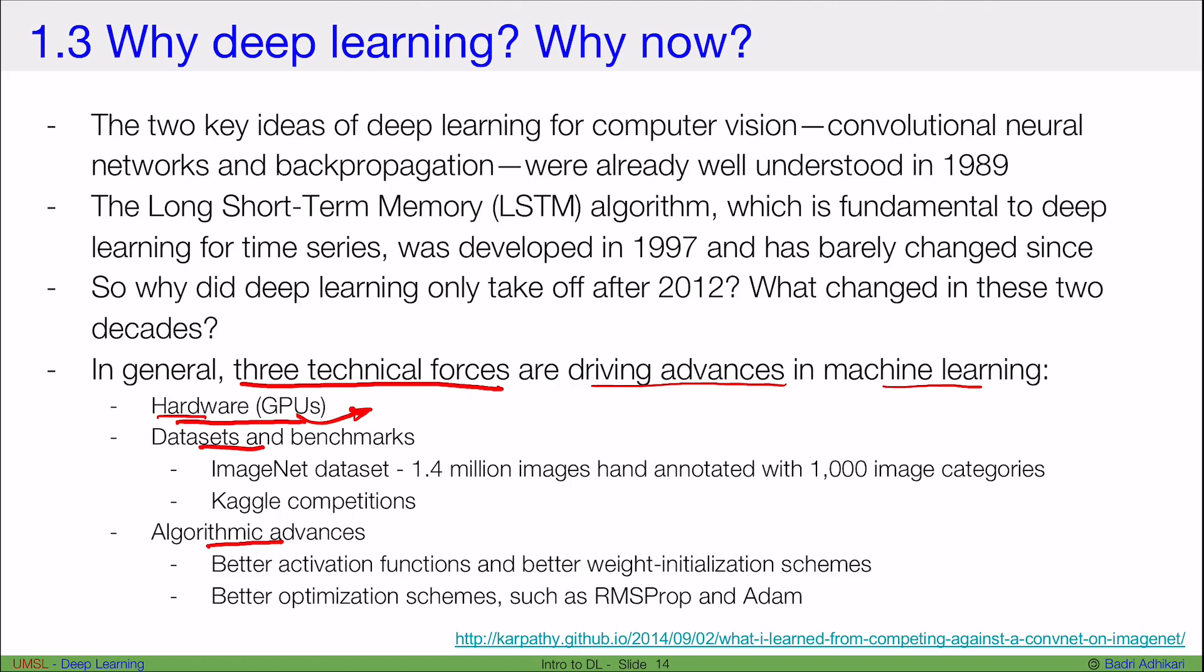Also, back then we did not have large datasets and benchmarks. For example, the ImageNet dataset was not at that time. Databases like Kaggle were not at that time. So the lack of enough data also was the reason why deep learning could not kick off at that time.